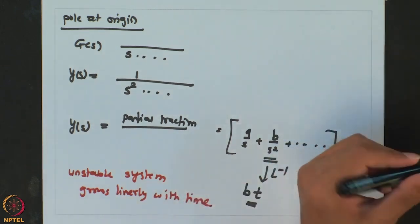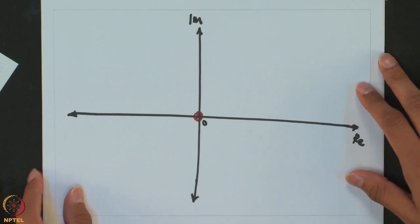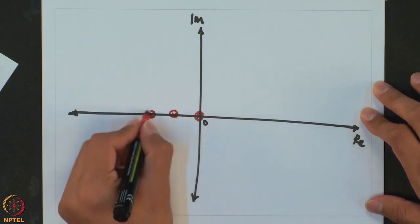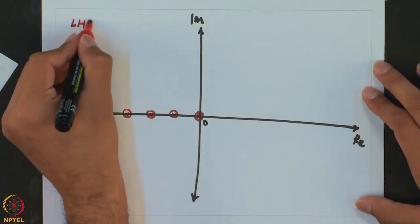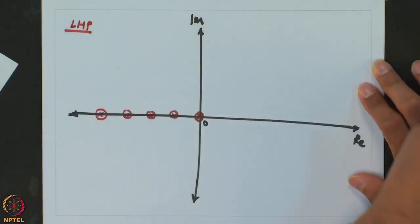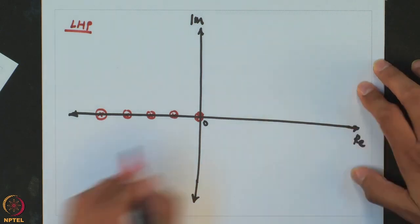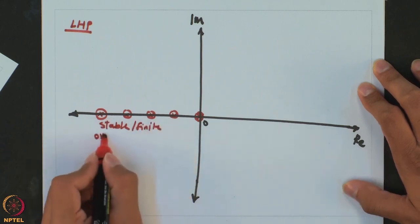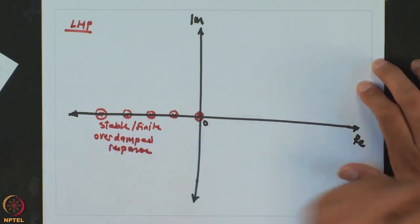A pole at the origin means the system will not have a stable final value. When we have a pole on the real axis in the left half plane — with a negative value — the response will have E raised to minus lambda T terms, which all decay down to zero. So all these give you a stable, finite, overdamped response with no oscillations.